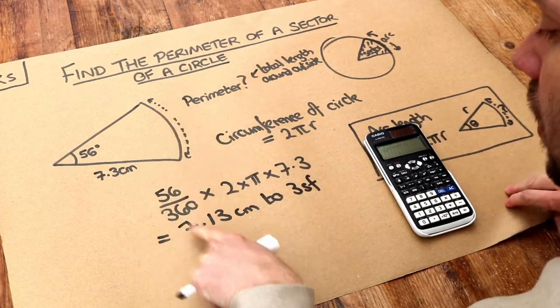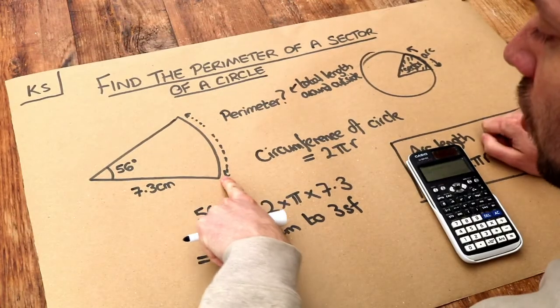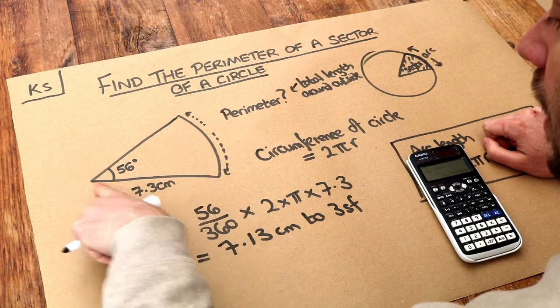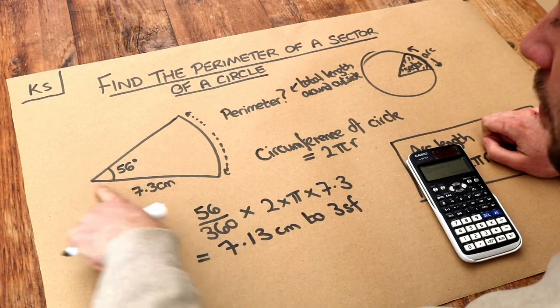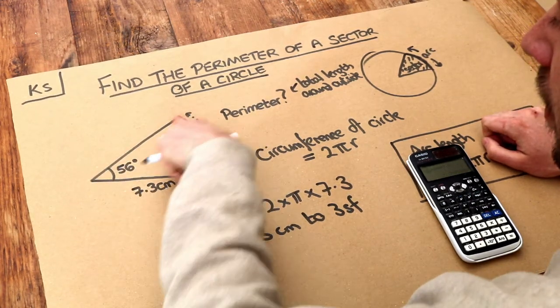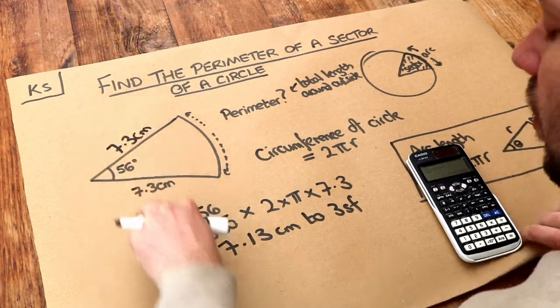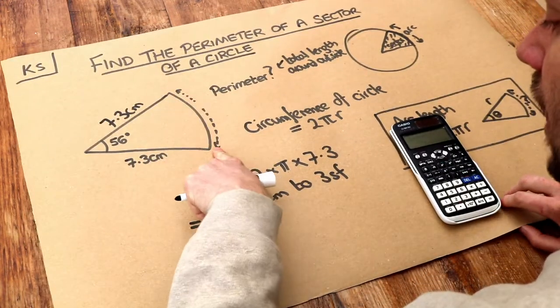So that's this length here. We've worked out that's 7.13. But we've got two more lengths to make the full perimeter: this length and this length. Now this length is 7.3. And because the radius is the same at any point in the circle, that's also going to be 7.3 centimetres. So we just need to add those three lengths together.